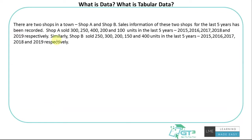For example, let's assume there are two shops in a town — Shop A and Shop B — and the sales information of these two shops for the last five years has been recorded. Shop A sold 300, 250, 400, 200, and 100 units in 2015, 2016, 2017, 2018, and 2019 respectively. Similarly, Shop B sold 250, 300, 200, 150, and 400 units in those same years. All these pieces of information, we call them data.